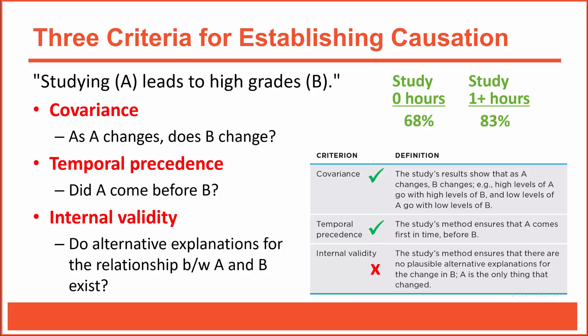This study fails to meet the requirement for internal validity. Although two out of three sounds pretty good, to establish causation you need to meet all three criteria with no exceptions. So, am I justified claiming that studying leads to higher grades? Because I failed to meet the three criteria for causation, I am not justified using causal language. The only fair way to describe the results is to use language describing simple associations — for example, that studying is associated with higher grades, or correlated with higher grades, or that students who studied earned higher grades. Each of those avoids suggesting a causal link.